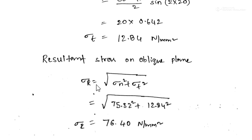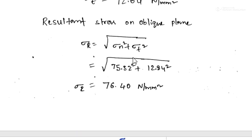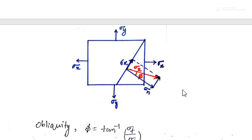The resultant stress is given by the formula: σr = √(σn² + σt²). Here σt is the tangential or shear stress on the oblique plane and σn is the normal stress. Substituting σn = 75.32 and σt = 12.84, and simplifying, we get the resultant stress σr = 76.40 N/mm².